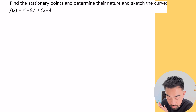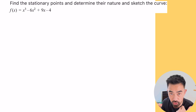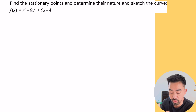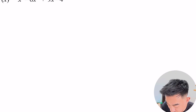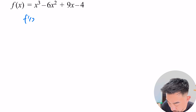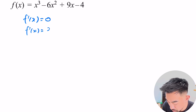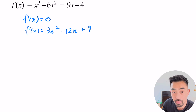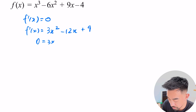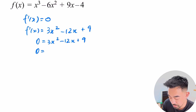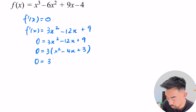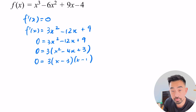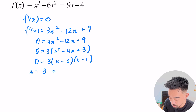Okay, let's look at the next question — pretty similar. Find the stationary points, determine their nature, and sketch the curve. To find stationary points we need f'(x) = 0. So f'(x) = 3x² − 12x + 9, and we solve 0 = 3x² − 12x + 9. Factor out the 3: that's x² − 4x + 3, which factors as 3(x − 3)(x − 1) = 0. So stationary points are x = 3 and x = 1.